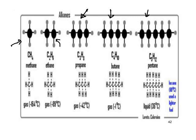Looking at boiling points: methane boils at −164°C, ethane at −89°C, propane at −42°C, butane at −1°C — all gases at room temperature (around 20°C). Pentane boils at 36°C, making it a volatile liquid at room temperature. Hexane, used in some cigarette lighters, is also a liquid with a boiling point of 69°C.